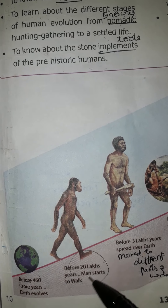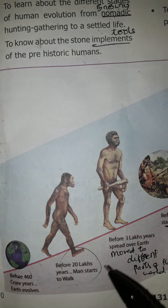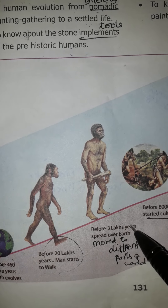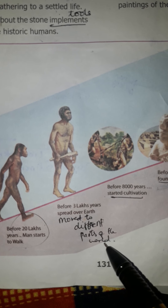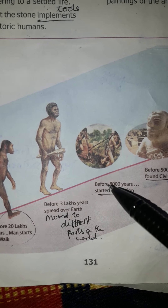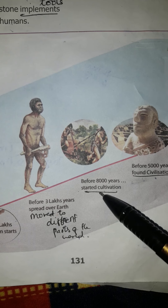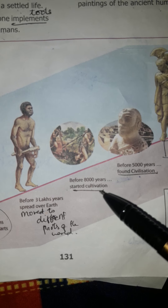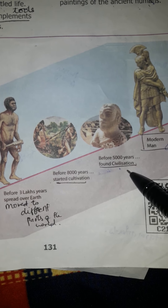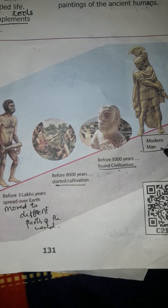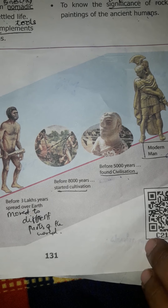See the picture: before 460 crore years, Earth evolved. Before 20 lakh years, man started to walk. Before 3 lakh years, man moved to different parts of the world. Before 8,000 years, they started cultivation. Before 5,000 years, they founded a civilization. At last, they became modern humans.